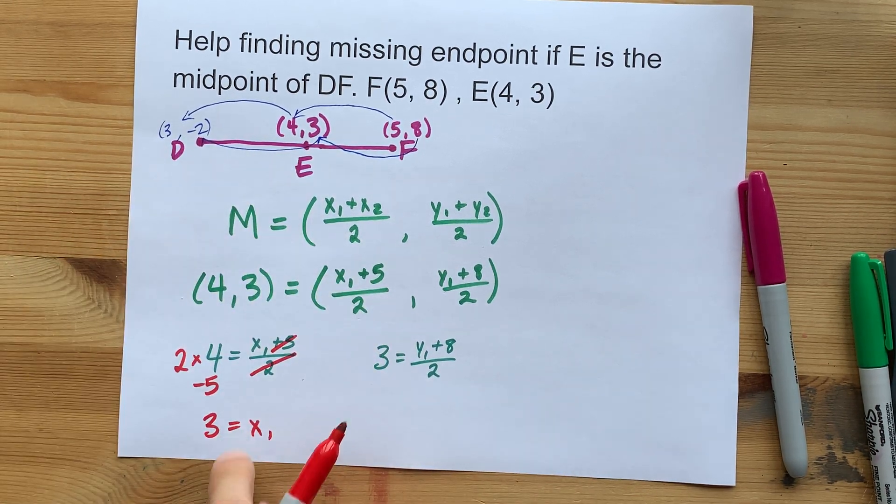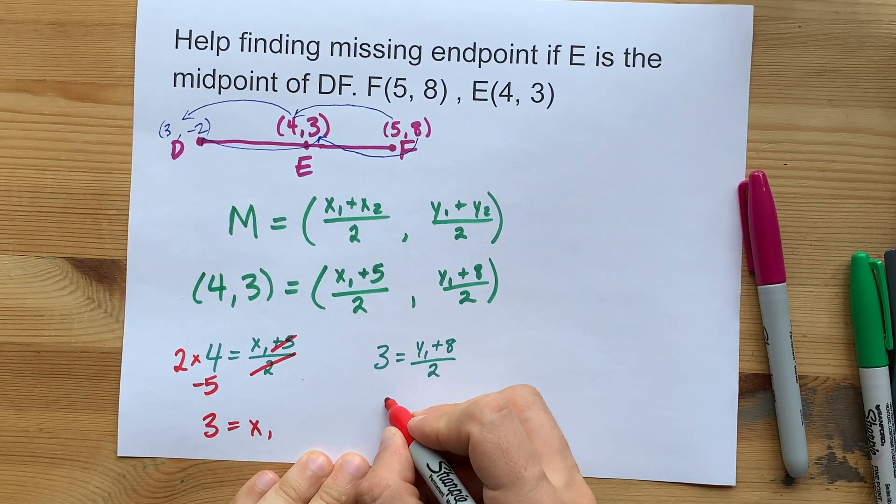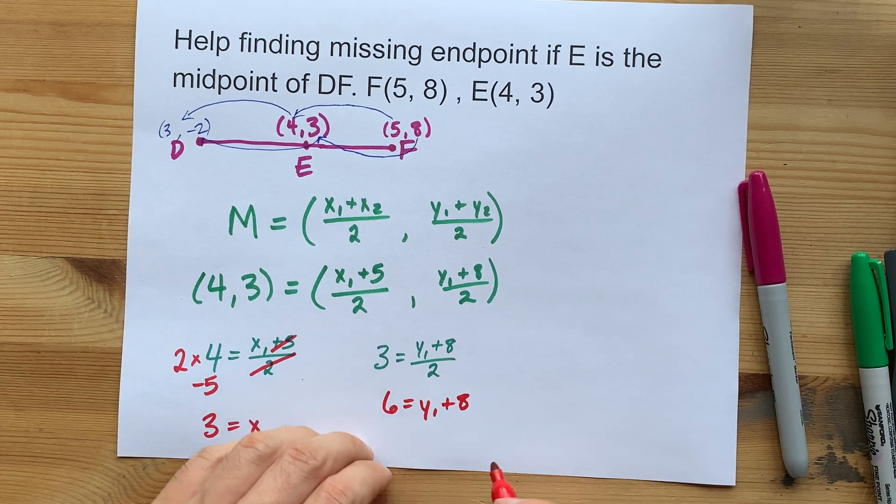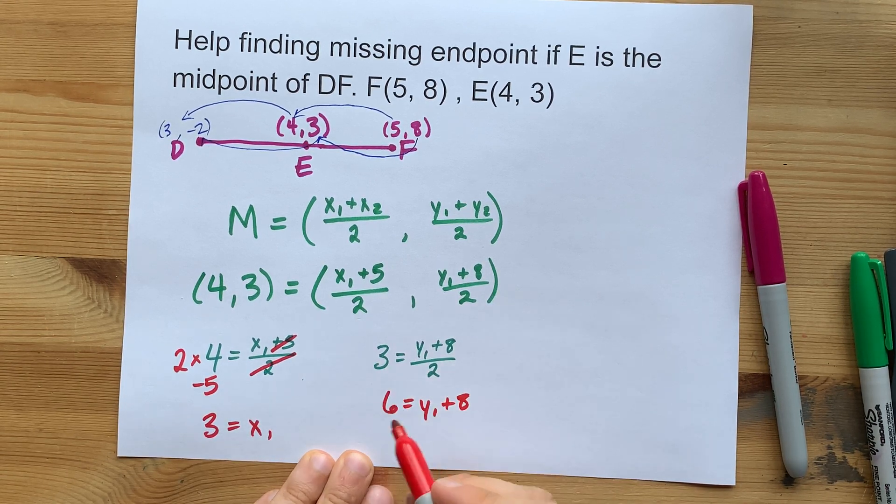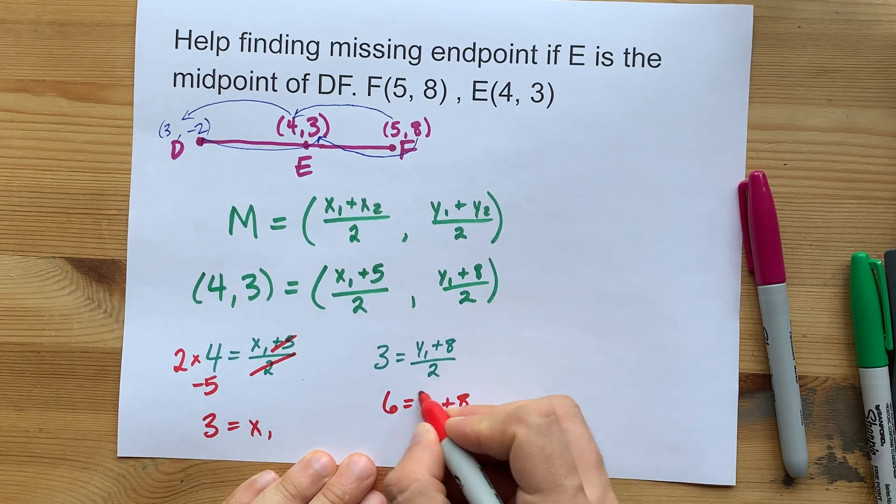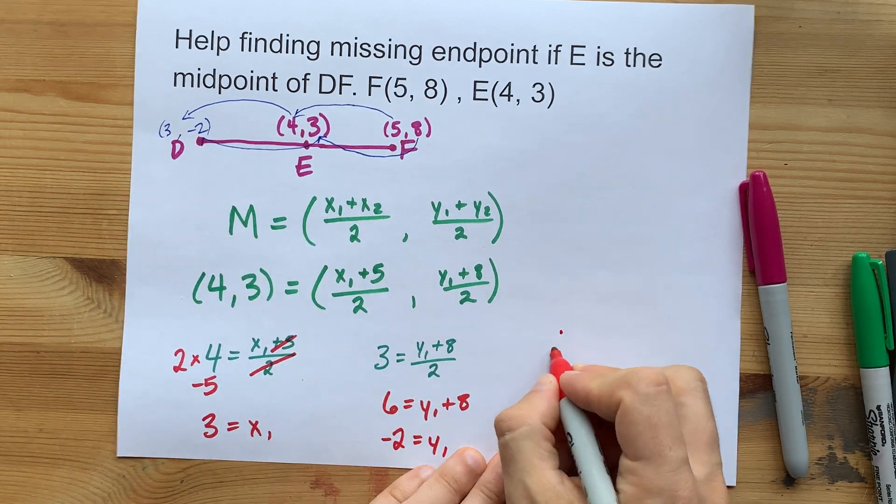2 times 3 gives 6. I'll show this a little more rigorously. See how I moved the divided by 2 to the other side and multiplied it instead. Then when you take away 8 on the other side, you get negative 2. That's also what we expected.